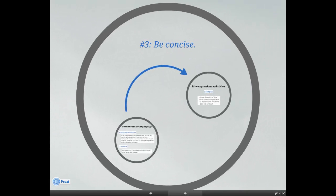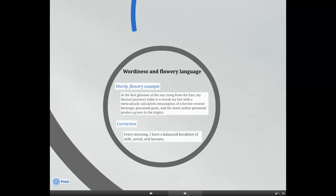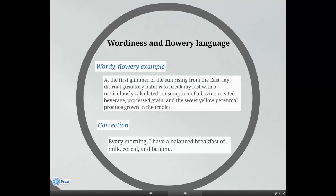Step number three: be concise. Try to be concise with words. Delete unnecessary words or phrases. For example, choose now rather than at this point in time, choose because rather than due to the fact that. Eliminate vague modifiers such as very, quite, somewhat, etc.